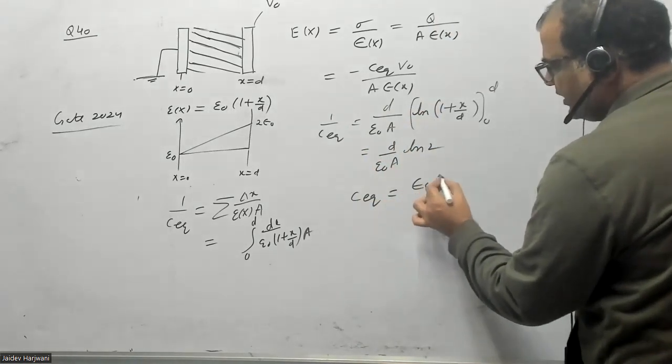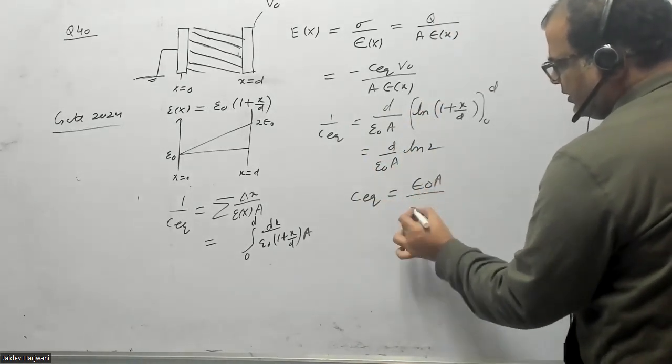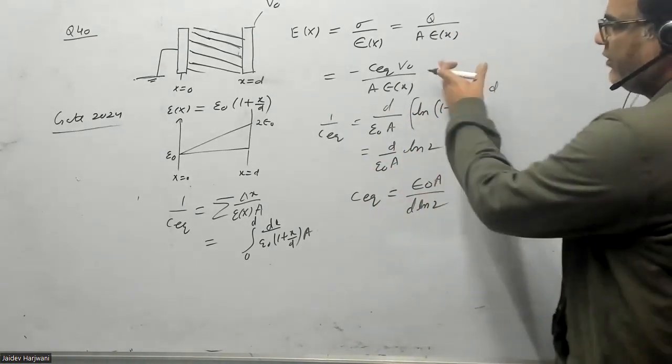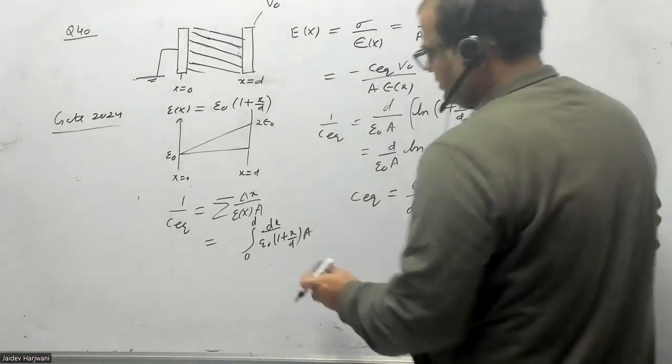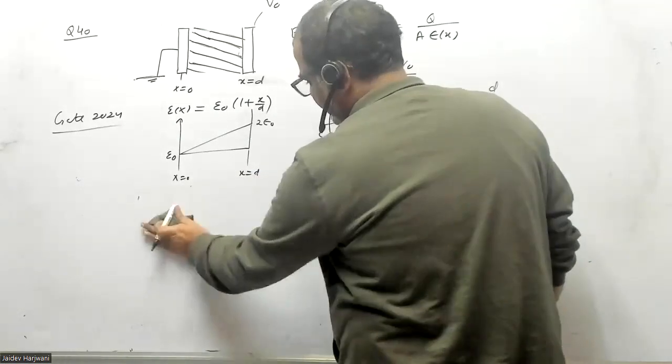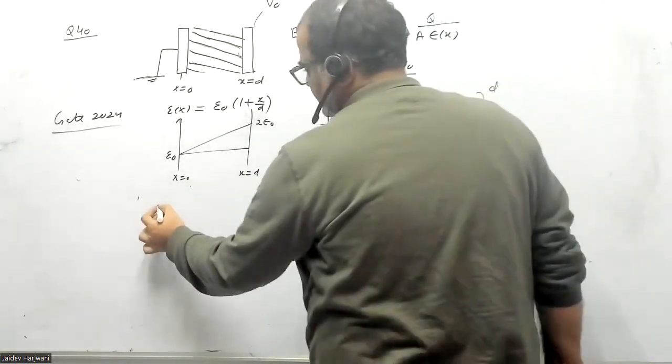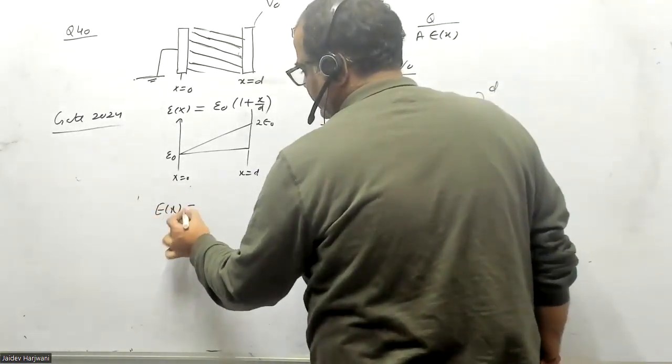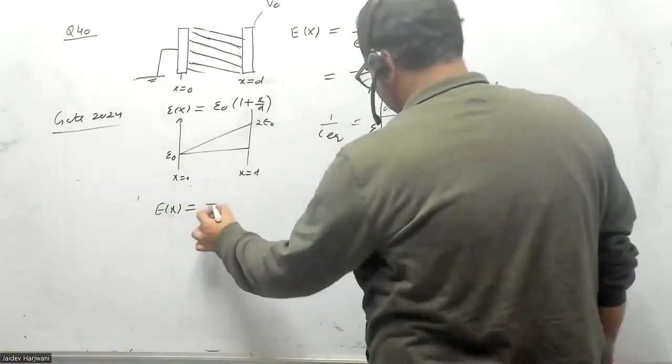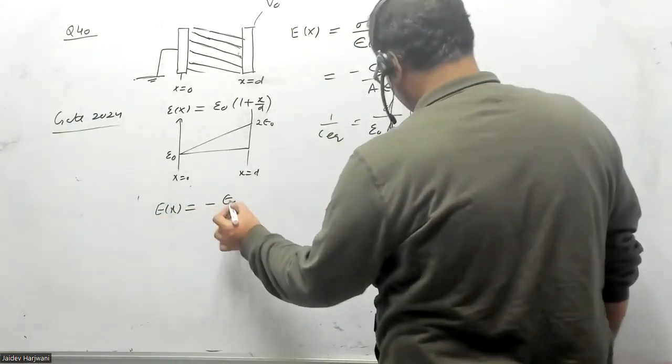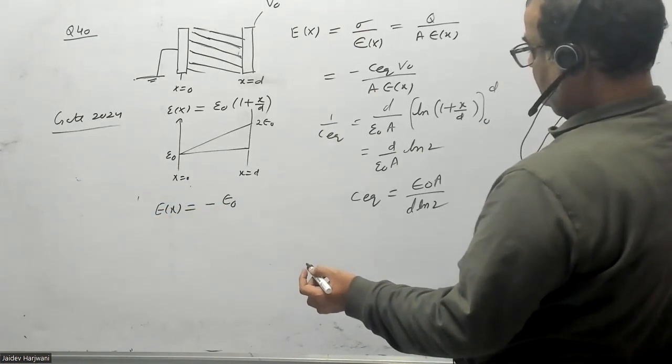Put the value here and you will get the answer. So your E(X) will be given by C equivalent times ε naught, ε naught A, V naught divided by A.